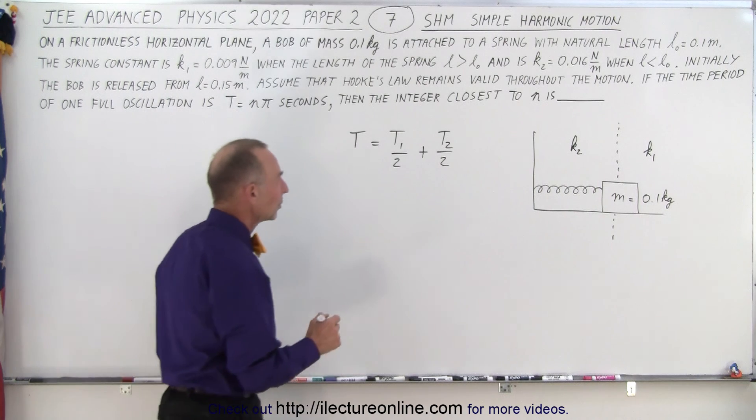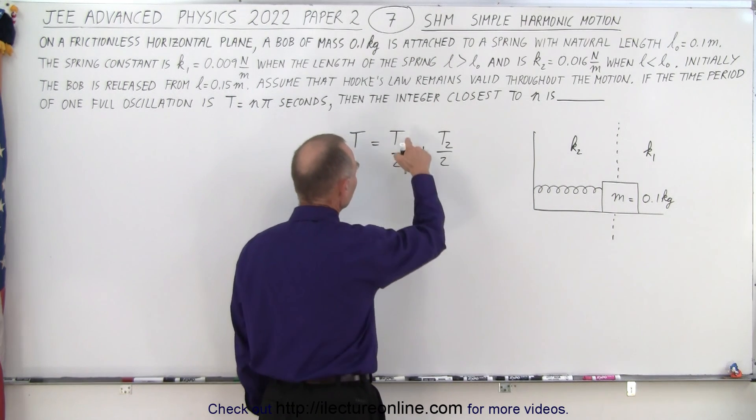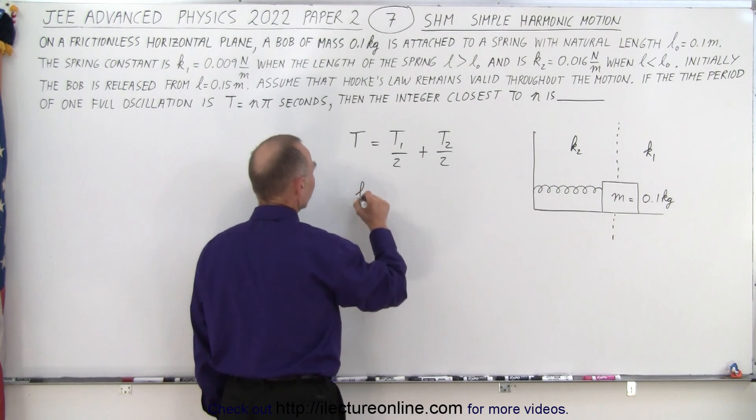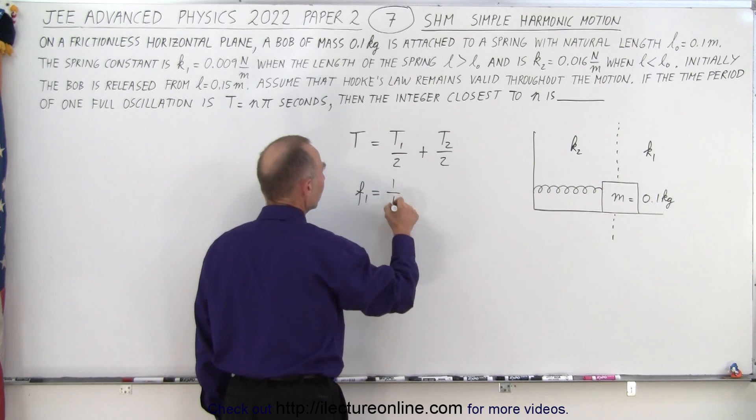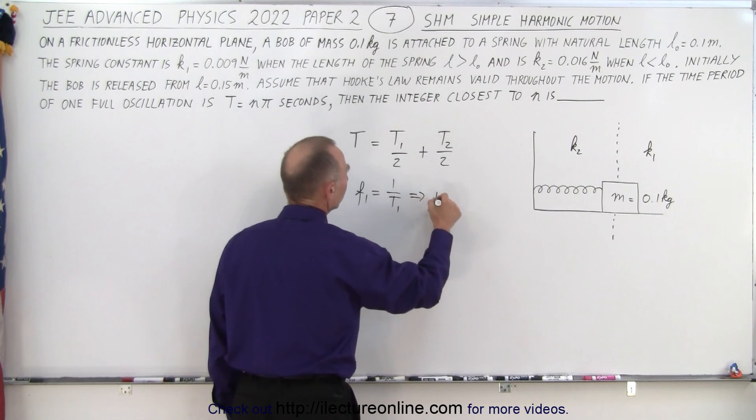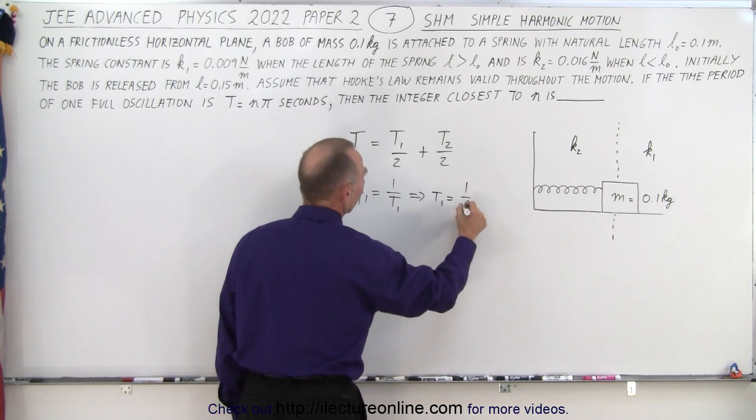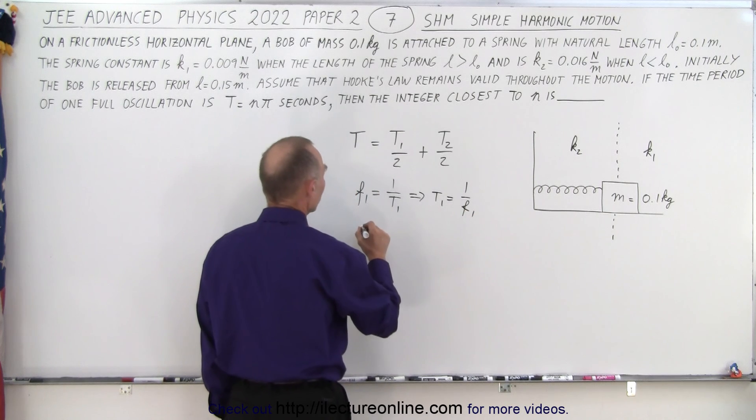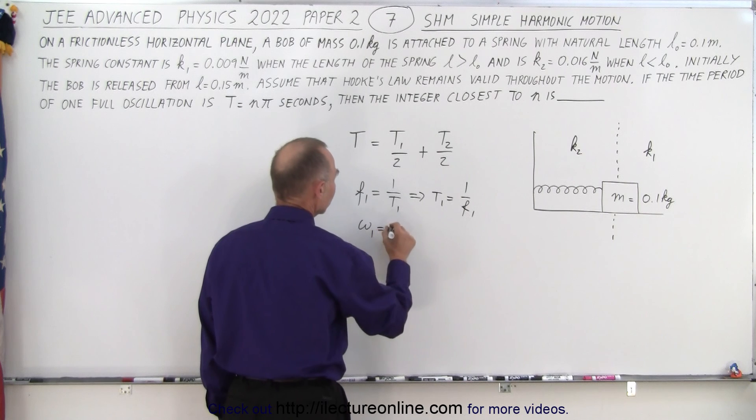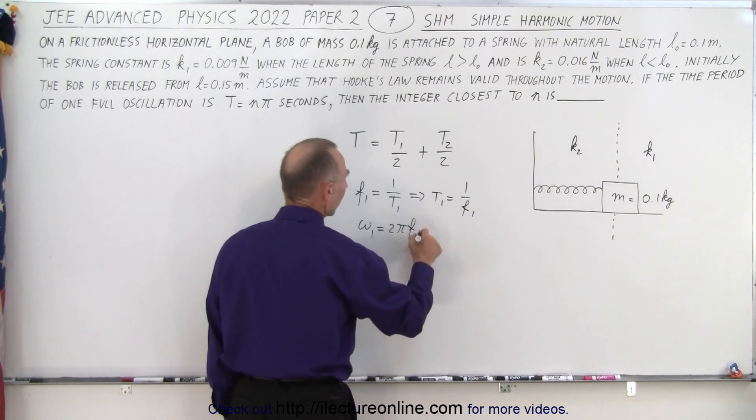All right so then what we can do is we can do as follows. We can use for t1 we realize of course that f1 equals 1 over t1 or t1 equals 1 over f1. And then we also know that omega 1 the angular frequency is equal to 2 pi f1.